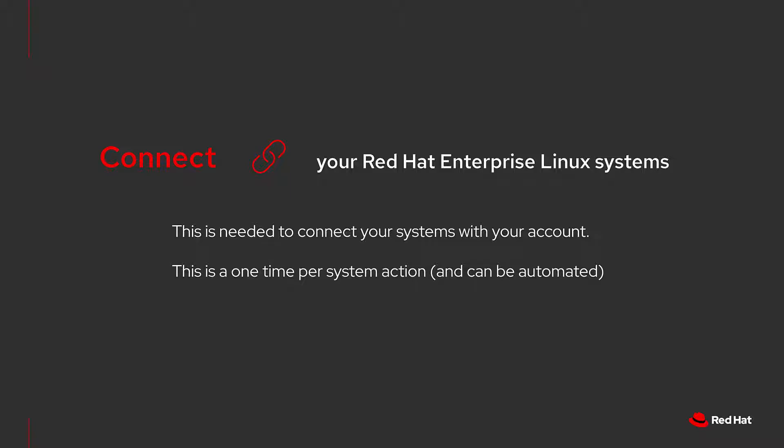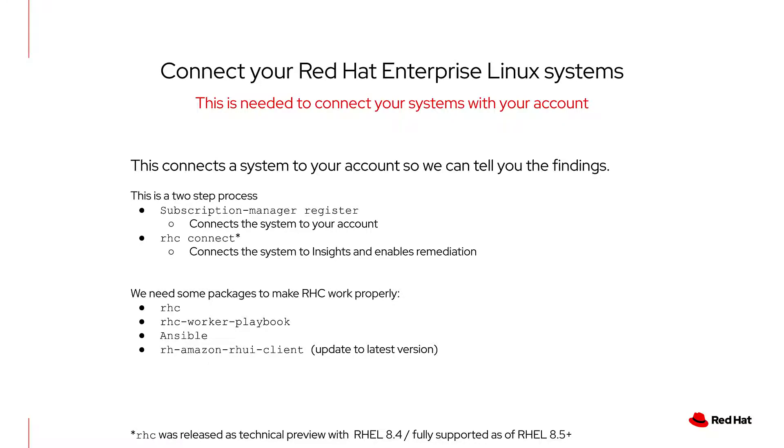Now that you have your Red Hat account, the next step is to connect the systems to your account. This is similar to how I created an account with Ford, then gave Ford the VIN number of my truck. The VIN number uniquely identifies my vehicle as belonging to me. This is an action that you take once per system, and of course this can be automated. The connection is currently a two-step process, and we're hoping to get this down to a single step in the future.